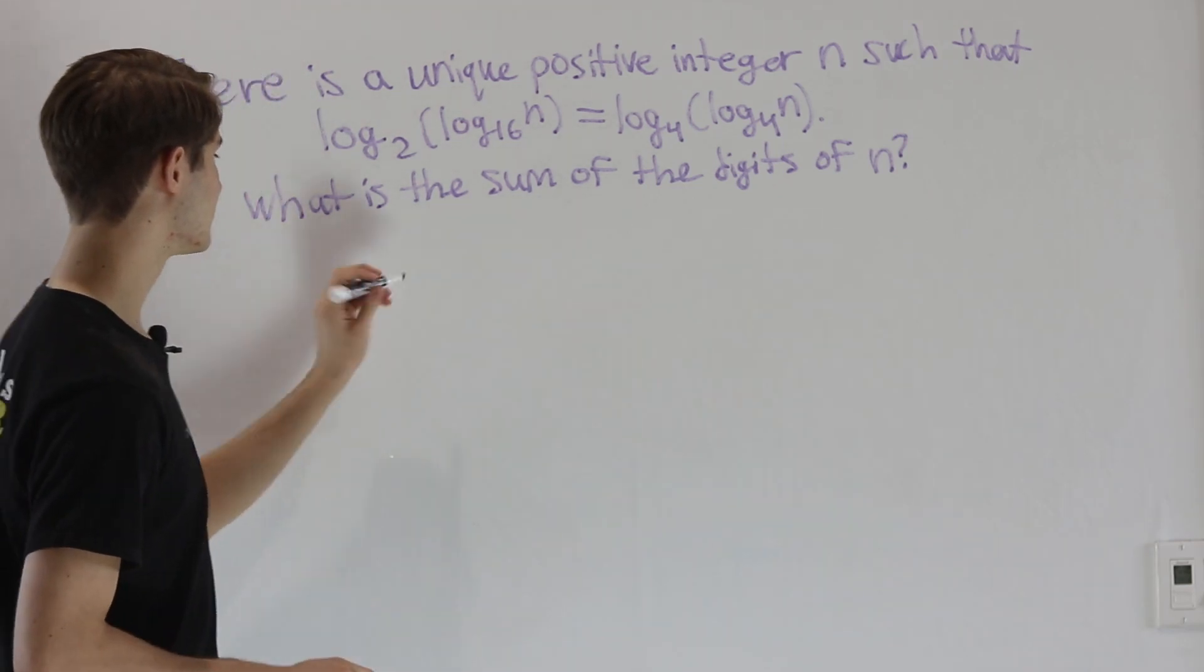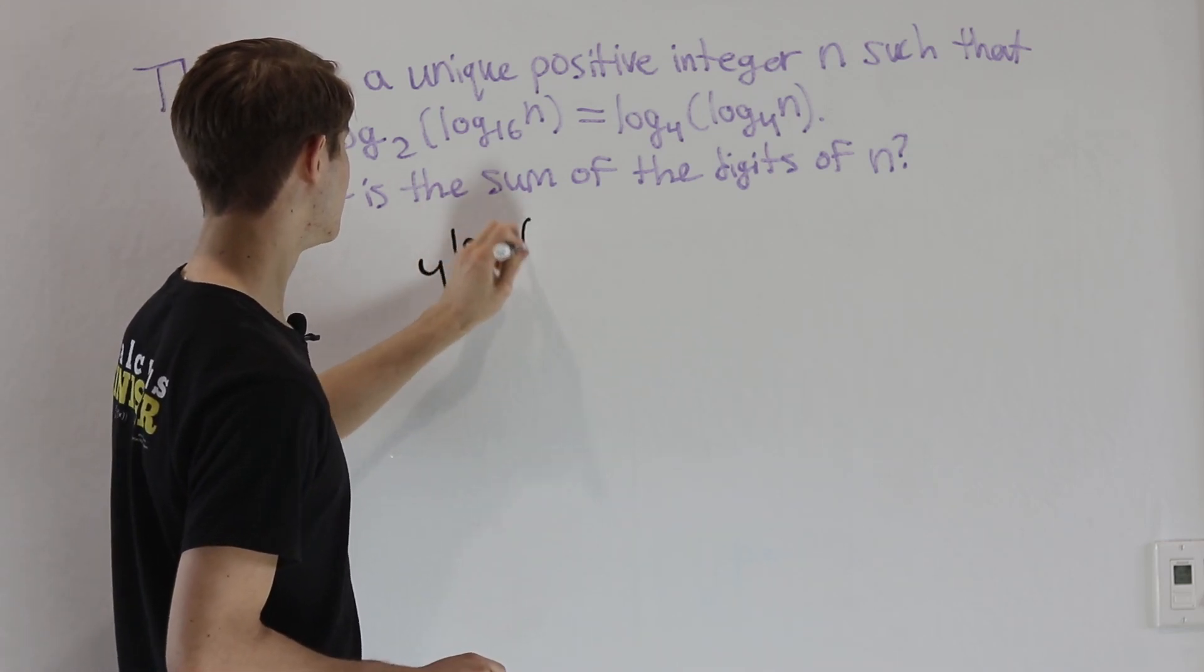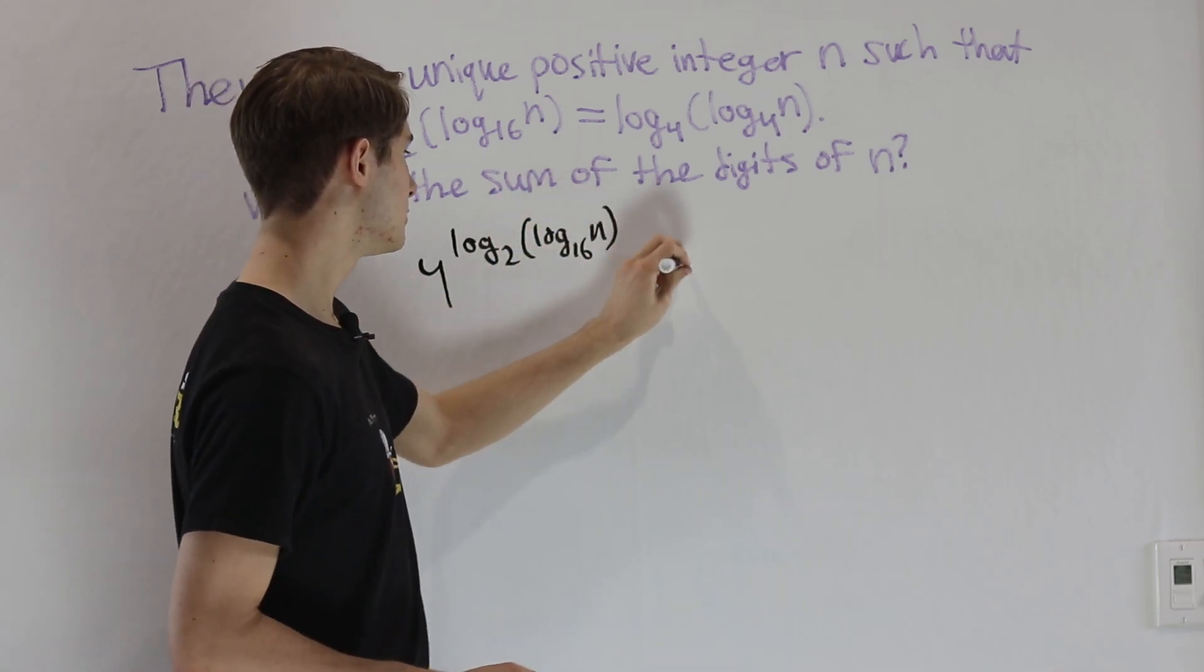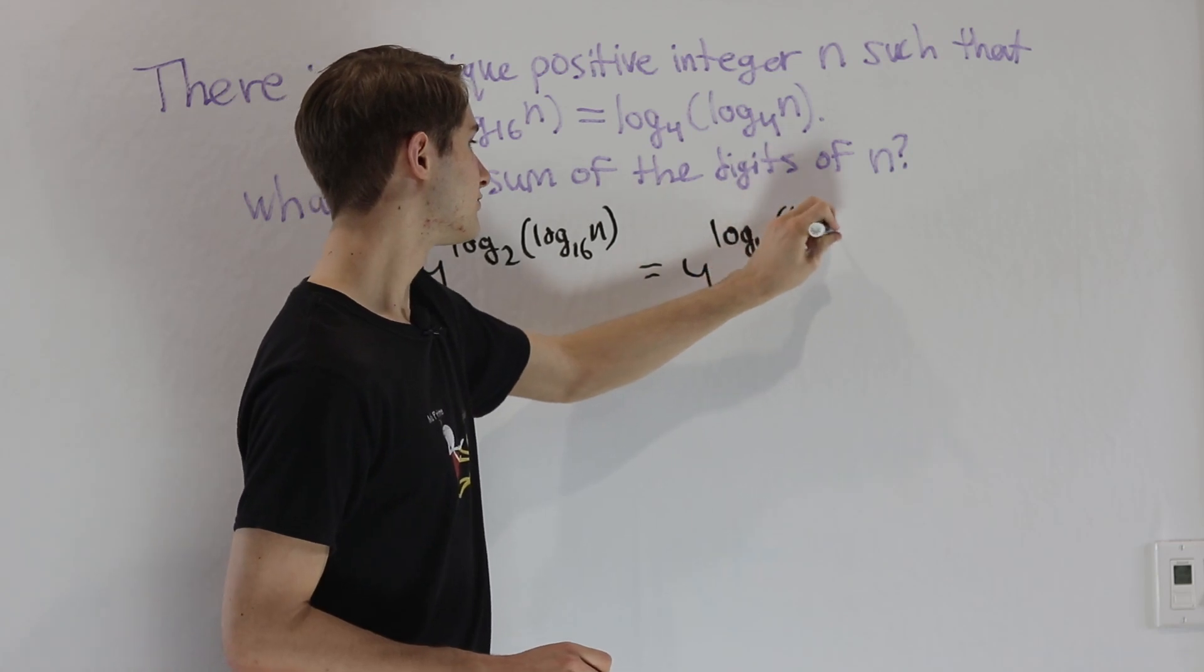Let's see what that looks like. On the right side we have 4 to the log base 2 of log base 16 of n, and that's going to equal 4 to the log base 4 of log base 4 of n.